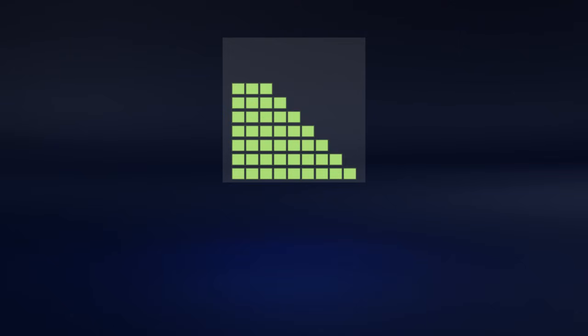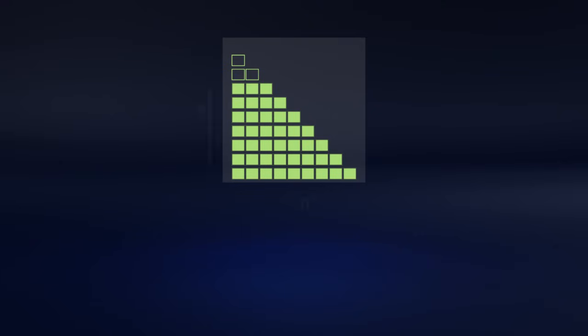It skipped the last two iterations thanks to its ability to detect when the list is already sorted and stop. But starting from a random permutation, this optimization is only likely to occur near the end anyway, so the number of comparisons is roughly n-squared divided by 2.